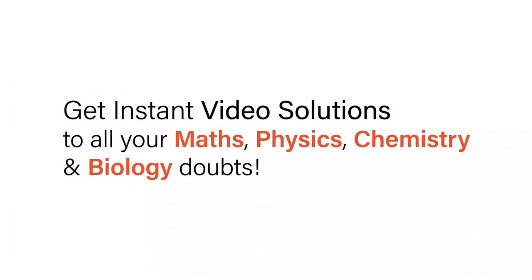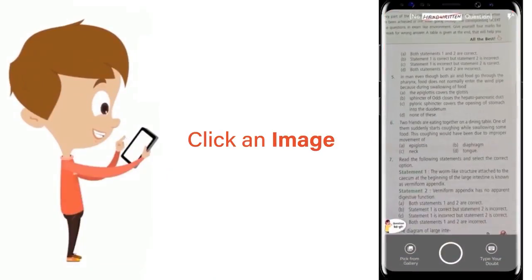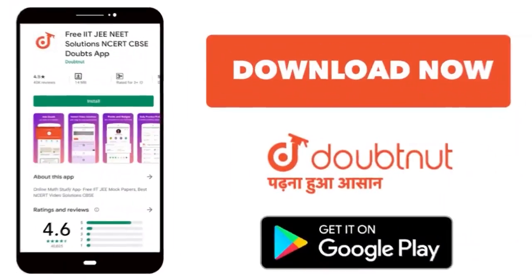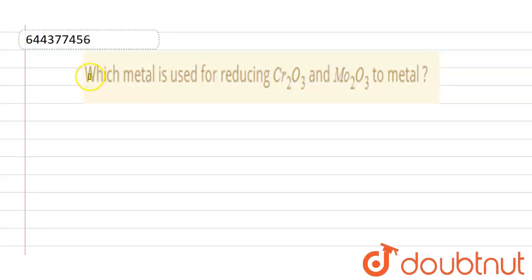With Doubtnet, get instant video solutions to all your math, physics, chemistry, and biology doubts. Just click the image of the question, crop the question, and get instant video solution. Download Doubtnet app today. Our question is: which metal is used for reducing Cr2O3 and Mo2O3 to metal?